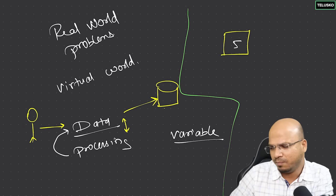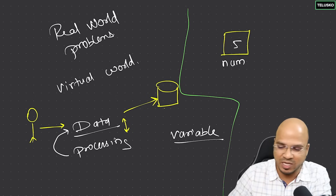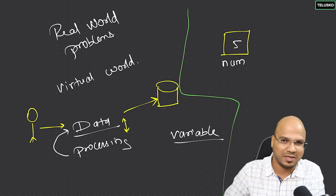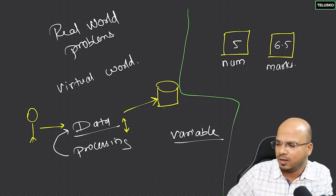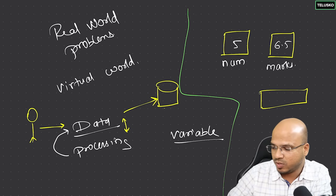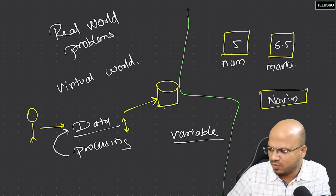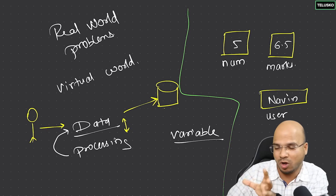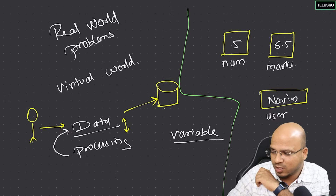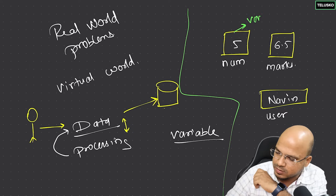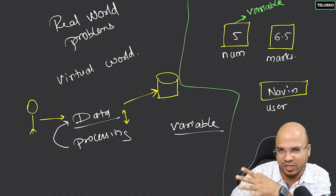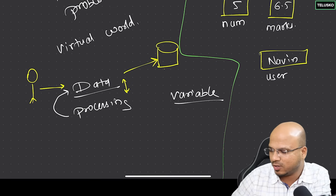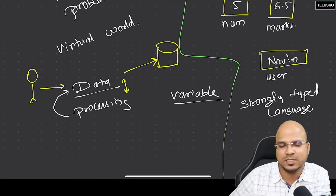For example, if I want to store the number 5, I put it in a box and give it a name like 'num'. I can create another box for a decimal value like 6.5 and call it 'marks'. I can also create a box for my name, storing 'Naveen' in a variable called 'user'. So a variable has a name and a value.